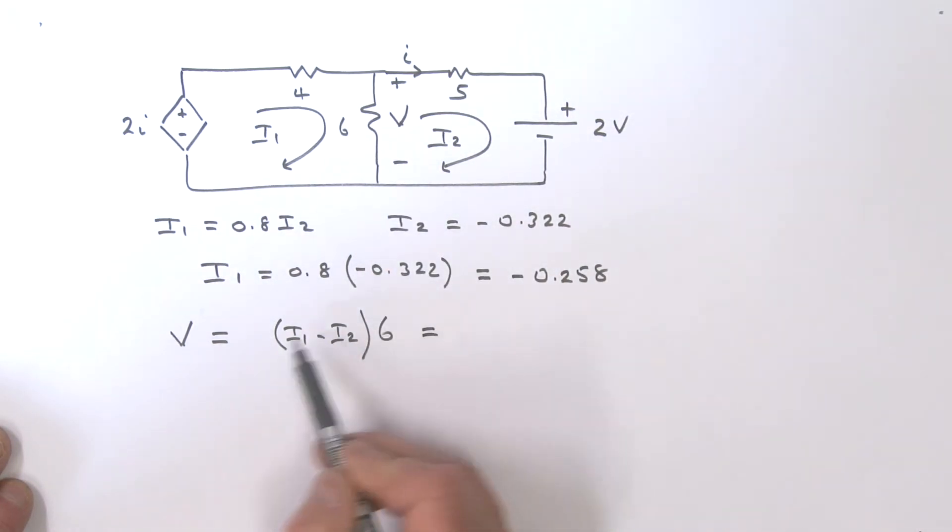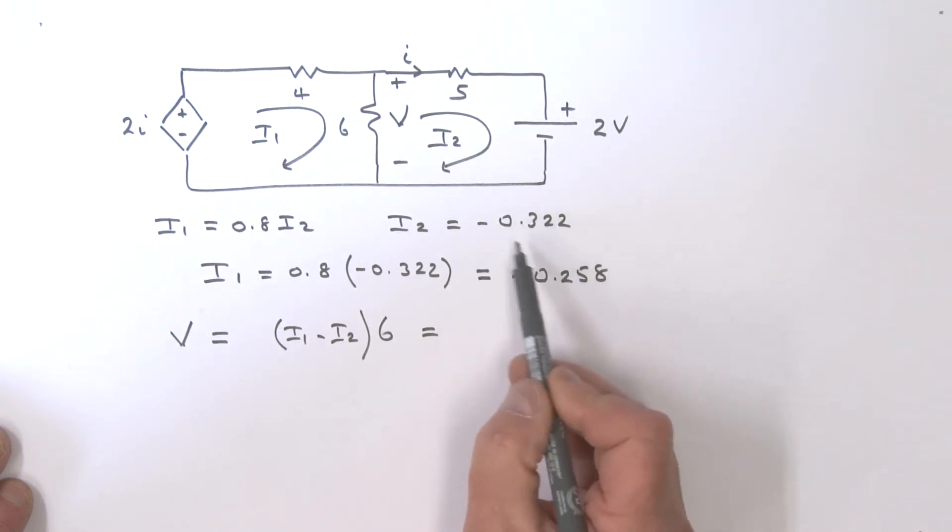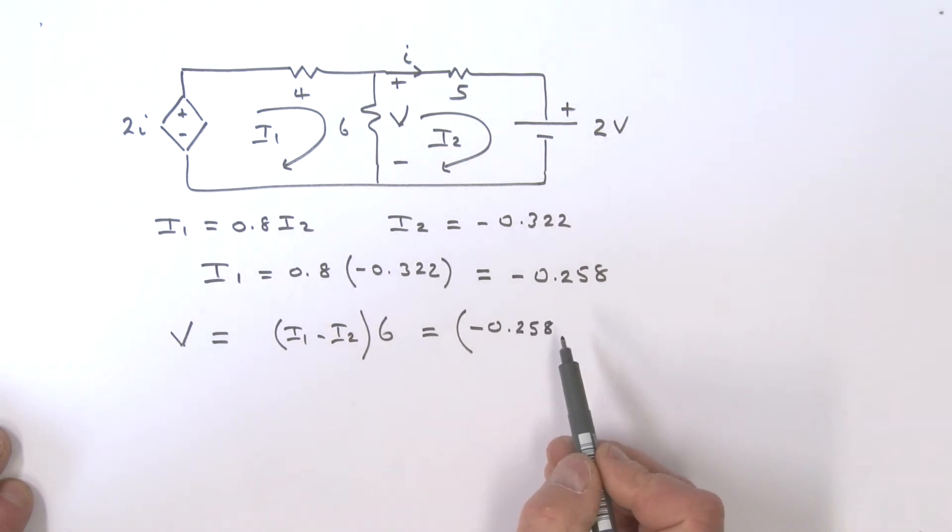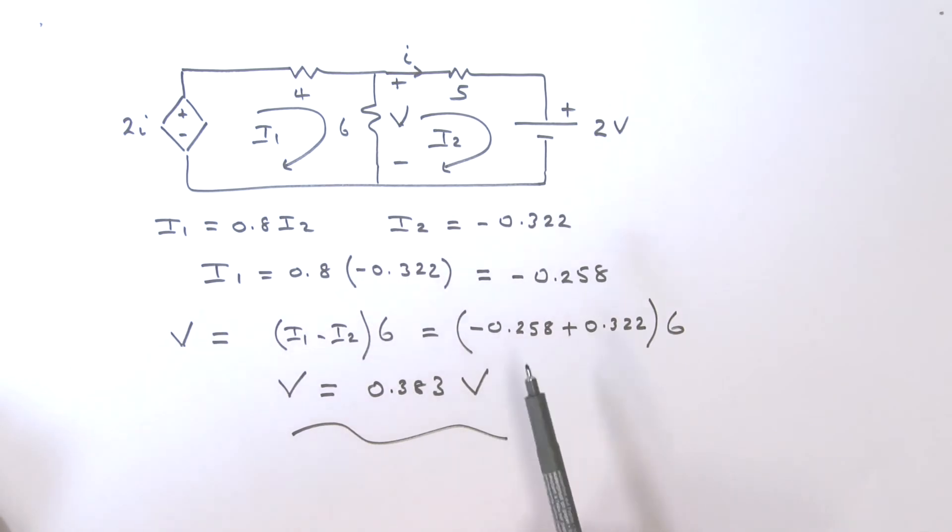Let's put the I1 and I2 in here. My bracket, minus 0.258, that is my I1, and then I'll put my I2 in. This as a minus, and I2 was a minus, it's a minus times a minus which becomes a plus, and that's 0.322. Close the bracket here, and that's multiplied by 6. If we work this out, we get this voltage V being equal to, with a bit of rounding, 0.383 volts. So that's using a mesh analysis approach on this circuit.